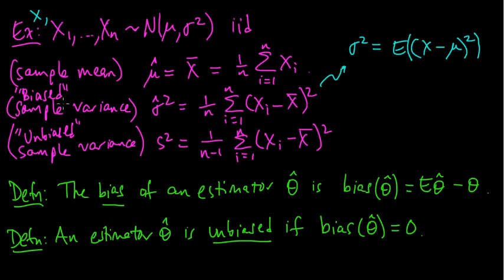And otherwise we say that it's biased. To justify calling these this, you might want to check that in fact this one is a biased estimate of the variance, and this one is an unbiased estimate of the variance. It's an easy calculation, and I would encourage you to do that calculation and verify that.